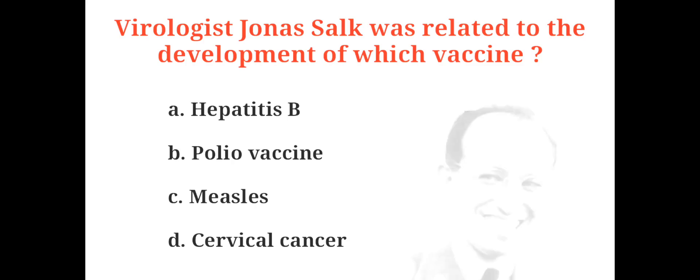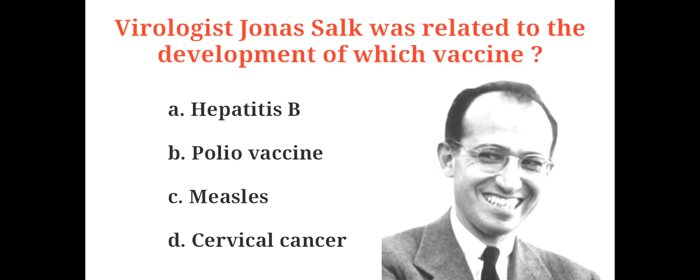Virologist Jonas Salk was related to development of which vaccine? A. Hepatitis B, B. Polio vaccine, C. Measles, D. Cervical cancer. And the correct answer is B. Polio vaccine.